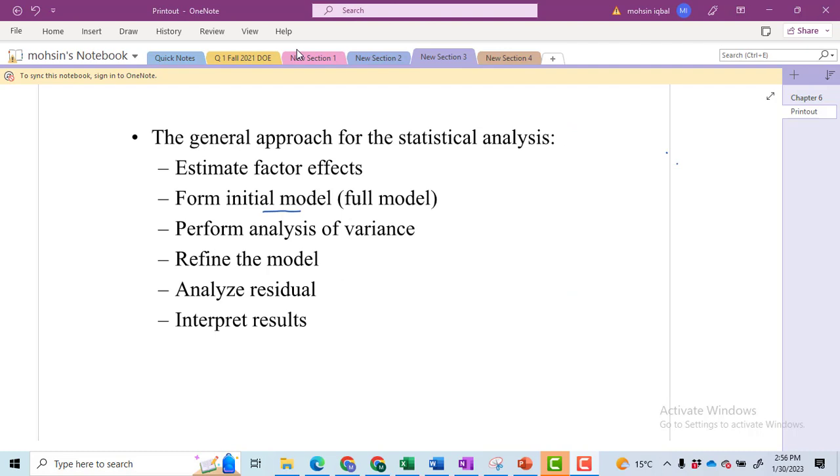The general approach for the statistical analysis of factorial design is the first step is estimate the factor effects. In order to calculate the effect, first of all, we will find the contrast. The contrast has been discussed in detail in earlier two series of the videos for 2 to power 3 design and 2 to power 2 design. You can see how to make the contrast in that video. After making the contrast, we will find the effect. This is basically the method how we can solve the problem manually. This is very time consuming. However, in order to save time, we can solve the problem in Minitab as well.